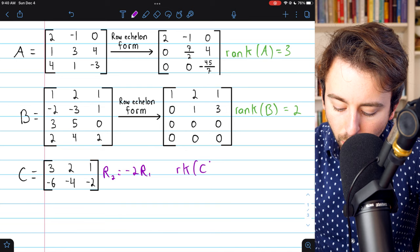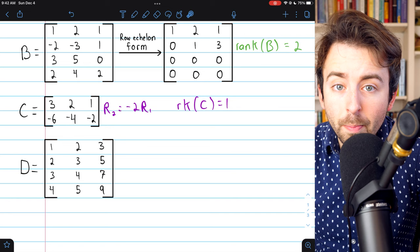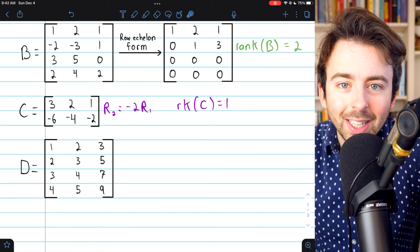This matrix D has fewer columns than it has rows, so it may be simpler to look at the columns. We notice the first two columns are linearly independent. There's no way to multiply column one to get column two.